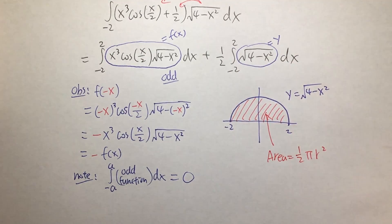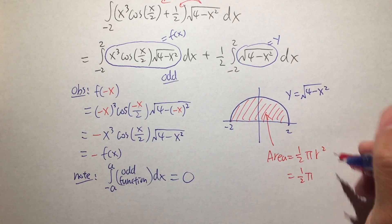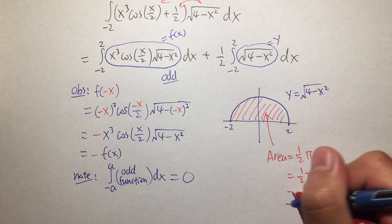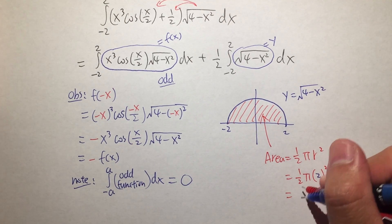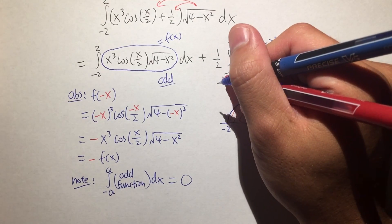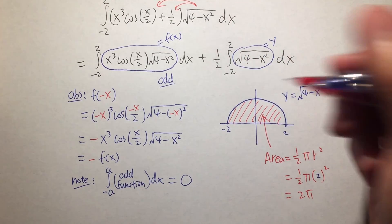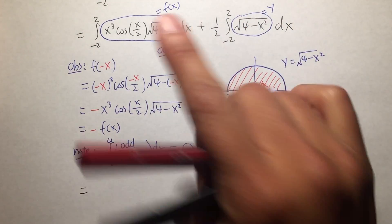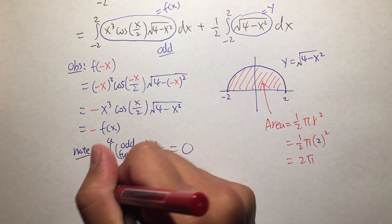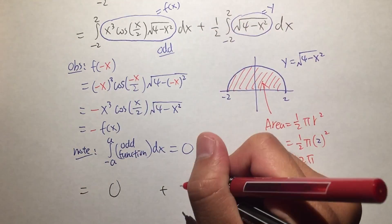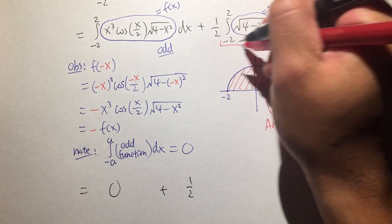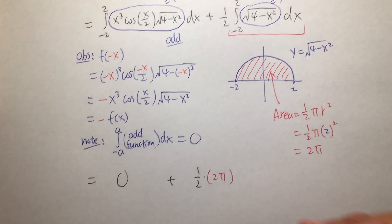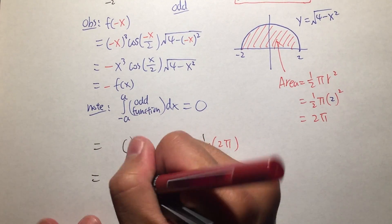Since it's a semicircle, we take half of pi r squared. The radius is 2, so r squared is 4, and half of pi times 4 is 2 pi. So that integral equals 2 pi. Now we multiply by the one half in front, so one half times 2 pi gives us pi.